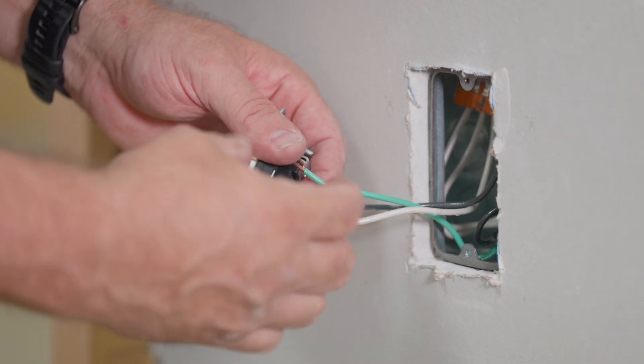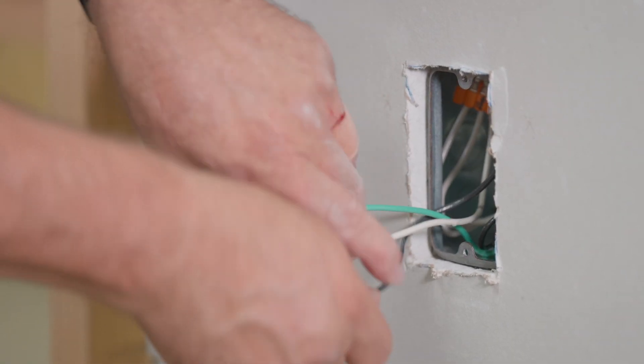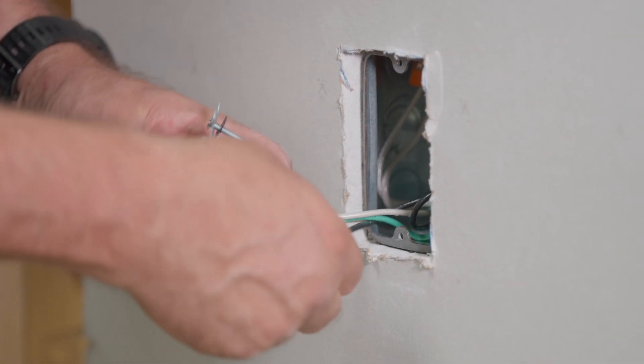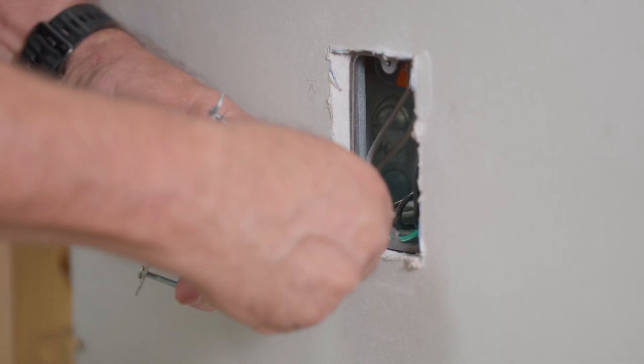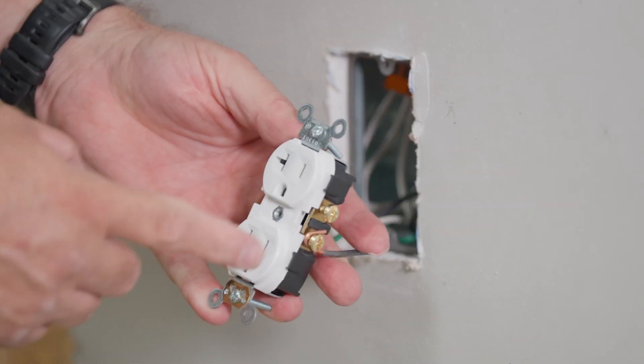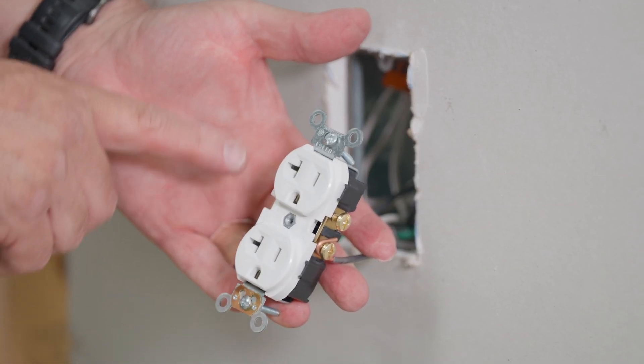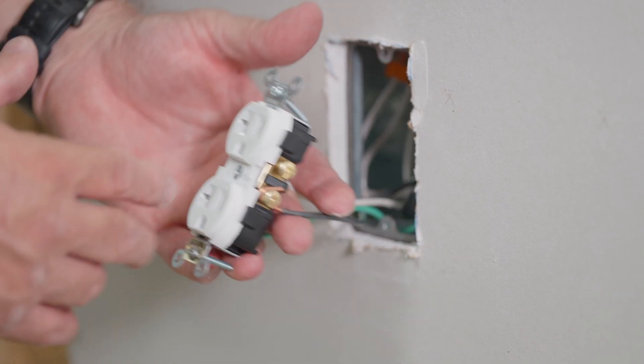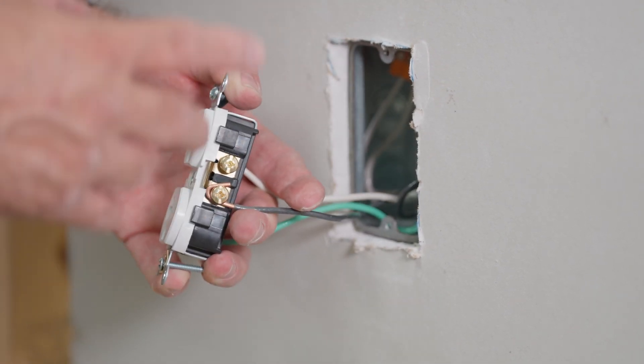Now what we'll do is turn this thing over to right side up. There you have it. And then we'll take this again, put it on the terminal on this side. You'll notice these are brass colored and these are silver colored. The silver colored terminals are for the neutral or grounded conductor. The brass is for the hot conductor.